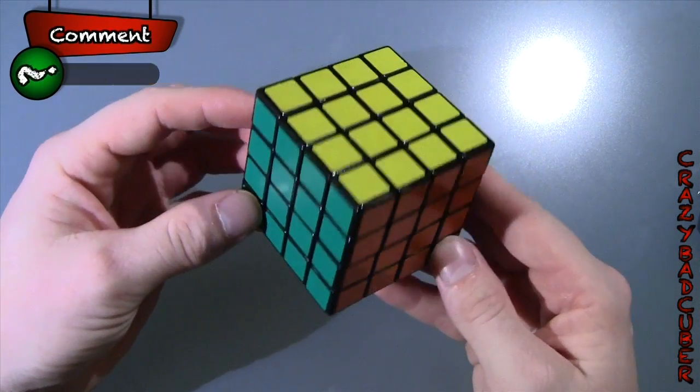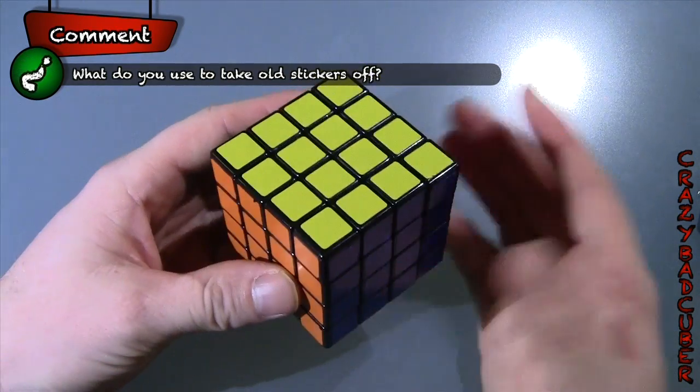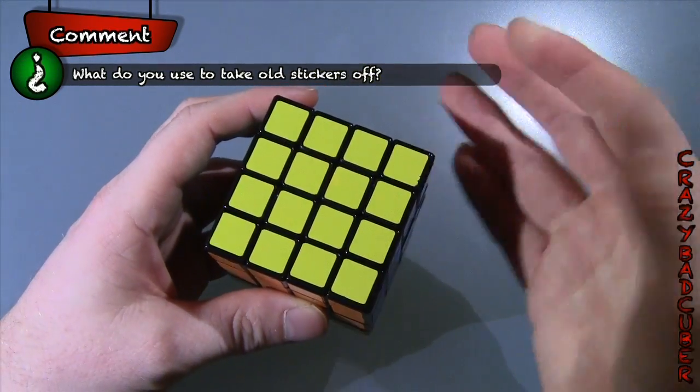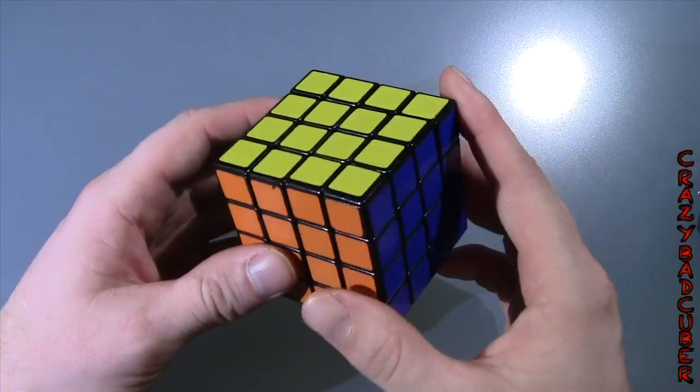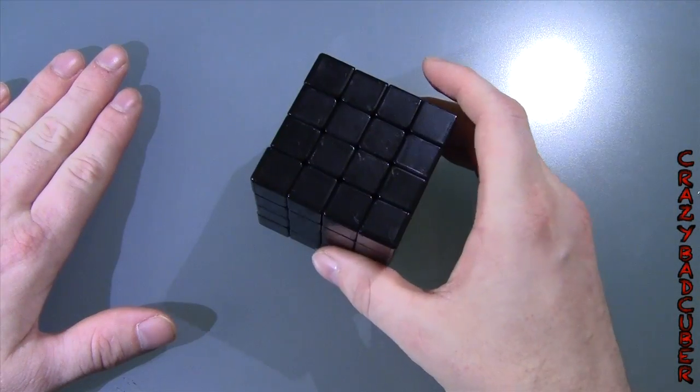The first thing you have to do is take the current stickers off. You can use whatever method, you can use one of those sticker things that look like a plastic exacto knife, or you can use your fingernail if you want to. I prefer this method and that seems to work pretty good for me.